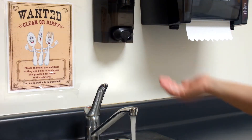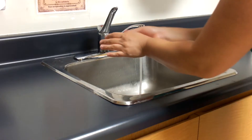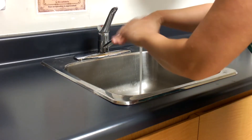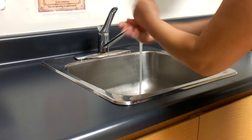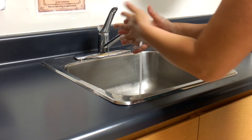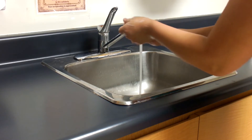Step 3: Spread soap for a full 20 seconds — palms, back of your hands, between your fingers, thumbs, knuckles, and fingertips.